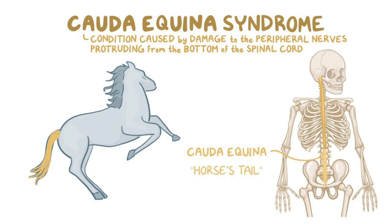How can you differentiate cauda equina syndrome from disc herniation or disc prolapse? Both have similar features — lower back pain radiating to the legs and foot. The differentiating feature is that in cauda equina syndrome you will have saddle paresthesia and urinary and fecal incontinence or retention, but in disc herniation and disc prolapse these symptoms will not be present.